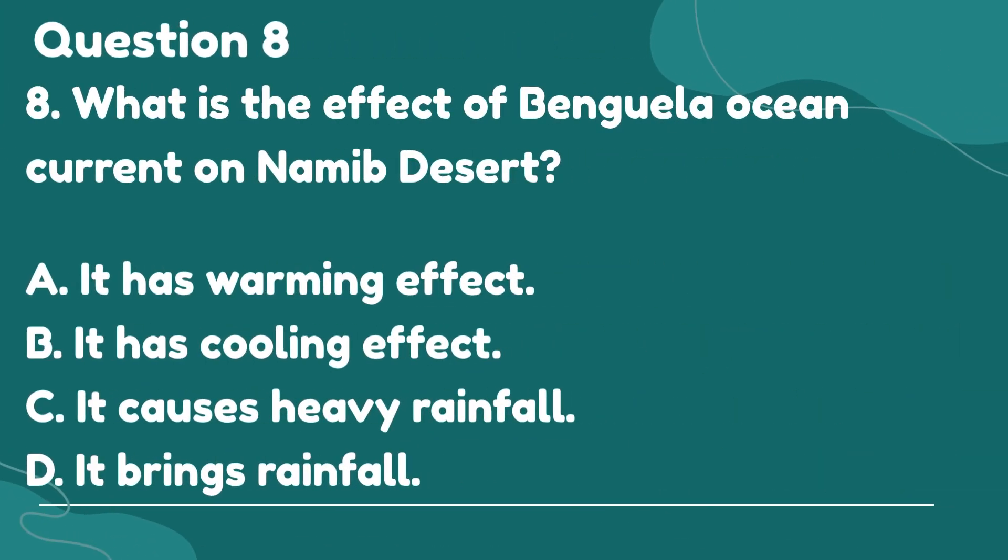Question 8. What is the effect of the Benguela ocean current on the Namib Desert? A. It has a warming effect. B. It has a cooling effect. C. It causes heavy rainfall. D. It brings rainfall.